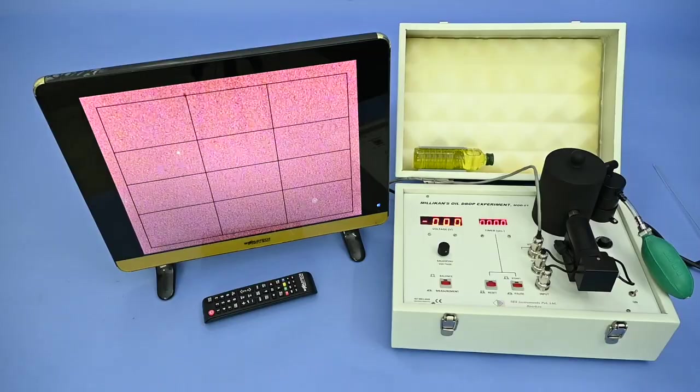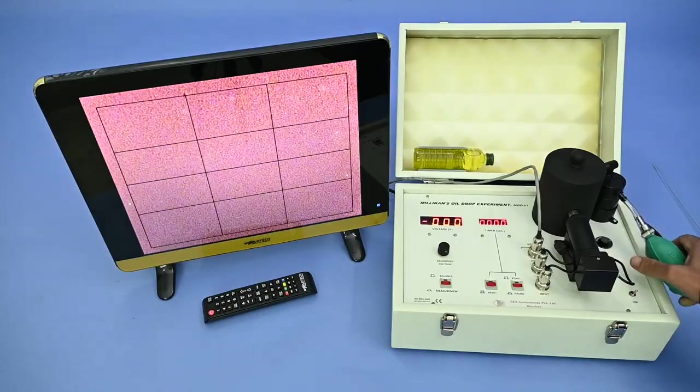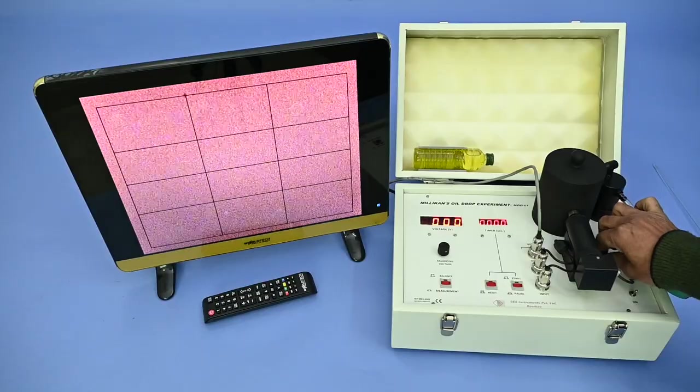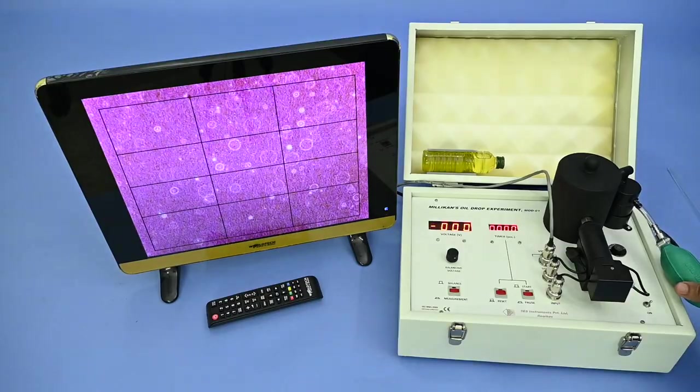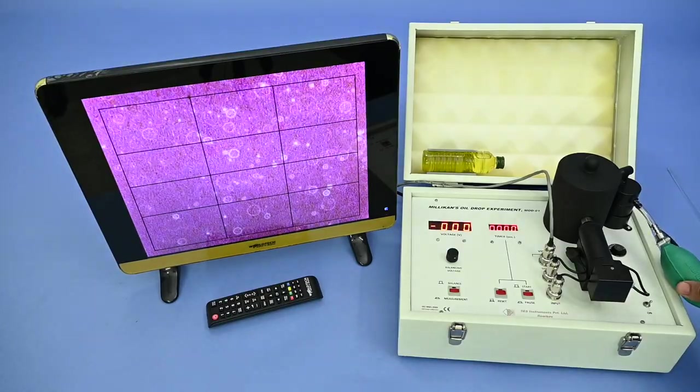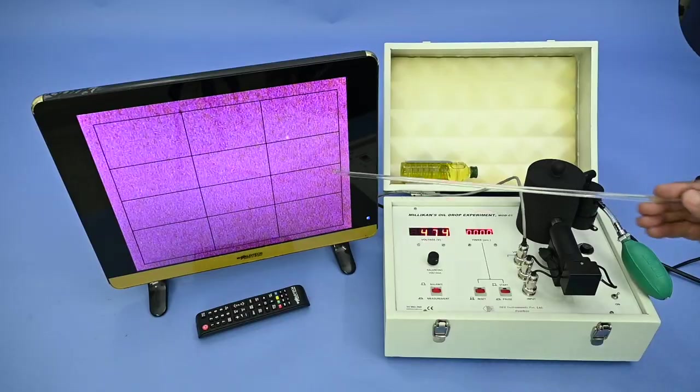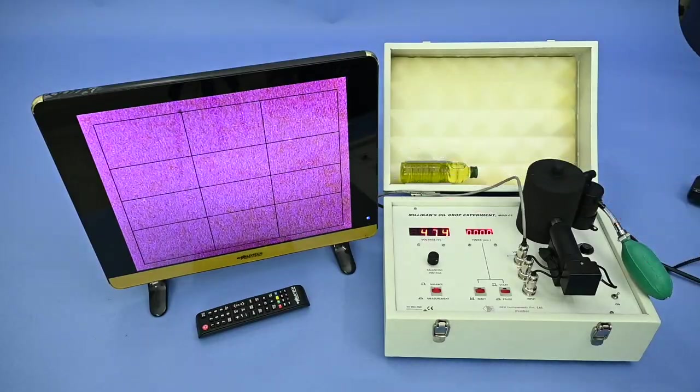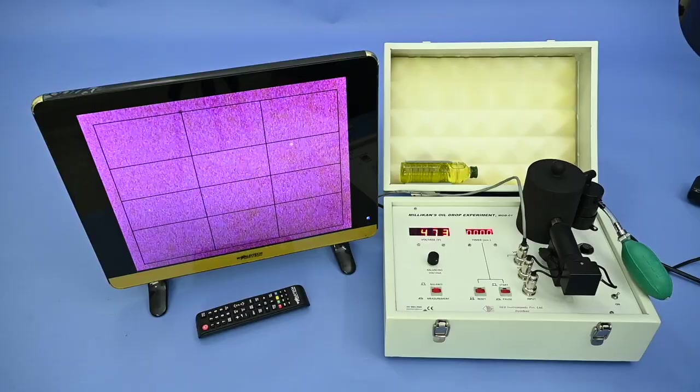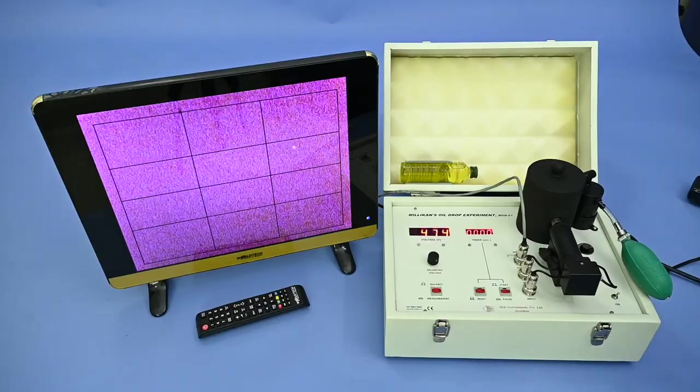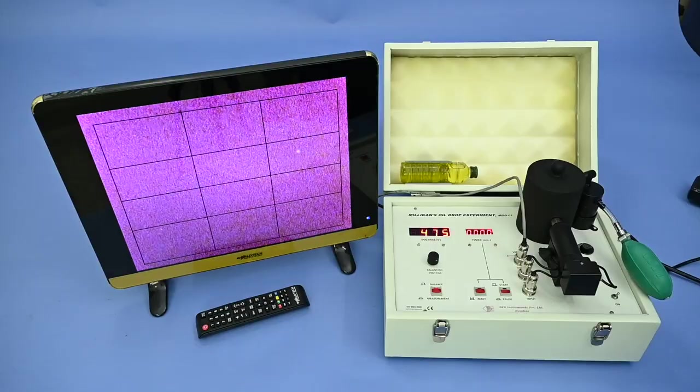Second is Balancing method. Same, press the bulb very gently and see the fog on the monitor. Wait for some time, let the heavy drops settle down. Select a droplet on the monitor and bring it close to the second line from the top and apply the variable voltage between 300 to 500 volt which can balance the mass of that drop. That is drop seems to be stationary for a few minutes.